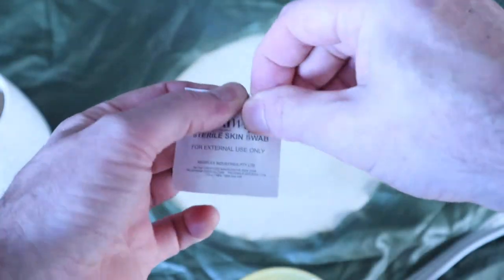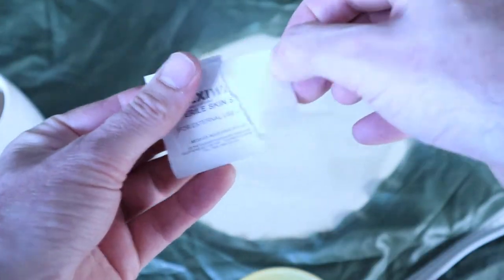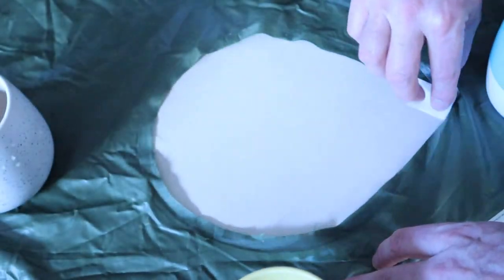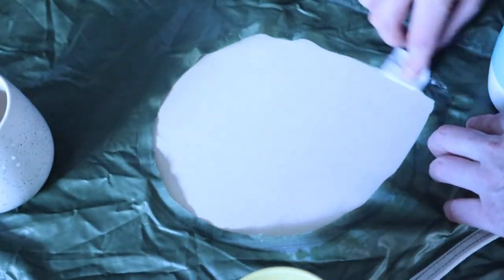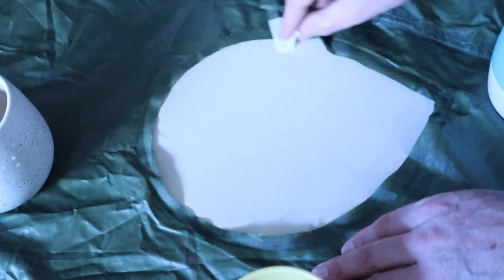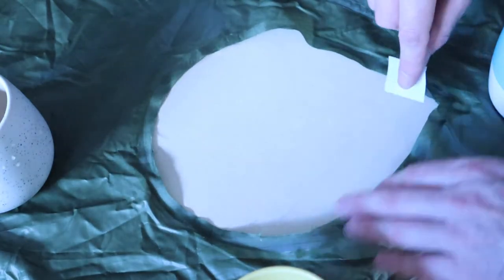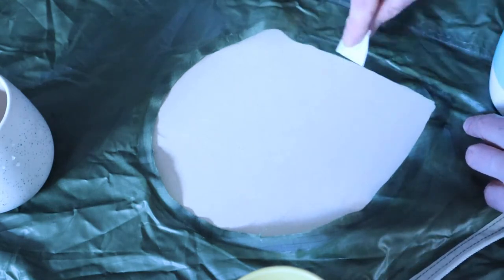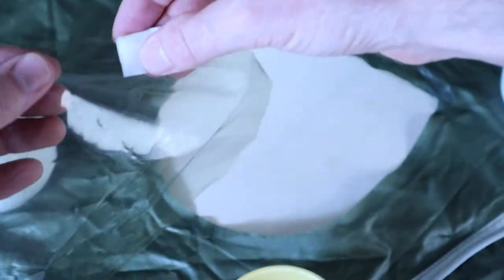Clean the inside edges of the fabric using isopropyl or alcohol wipes. Also do this for the edges of the clear window.